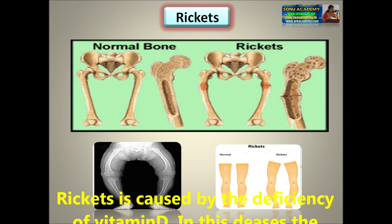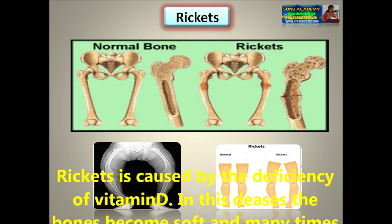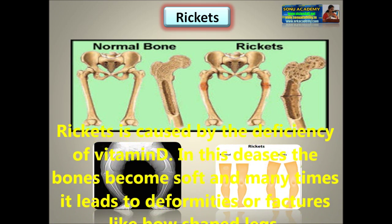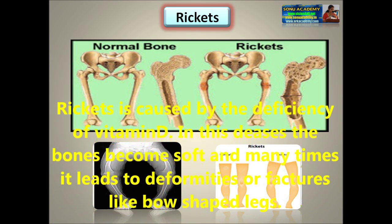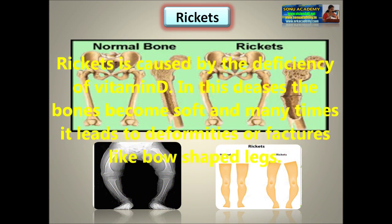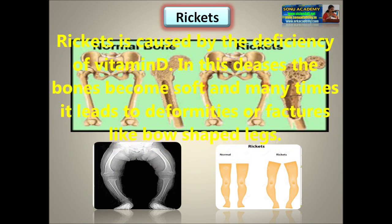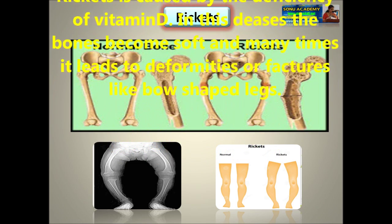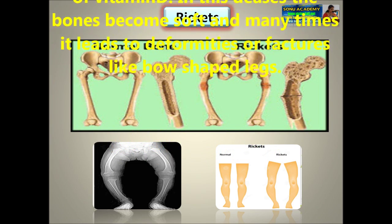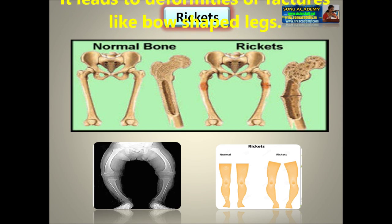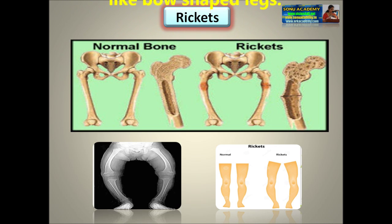Rickets is caused by the deficiency of Vitamin D. In this disease, the bones become soft and many times it leads to deformities or fractures, like bow-shaped legs.